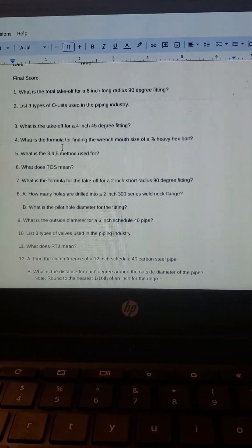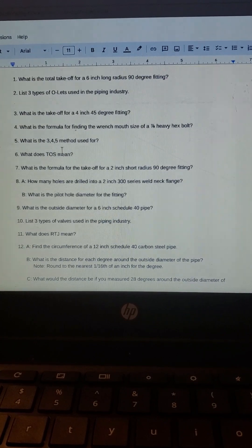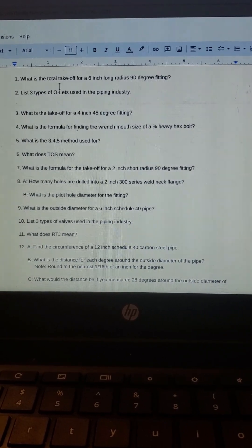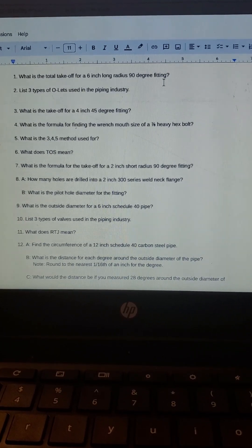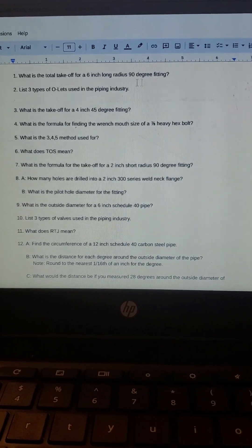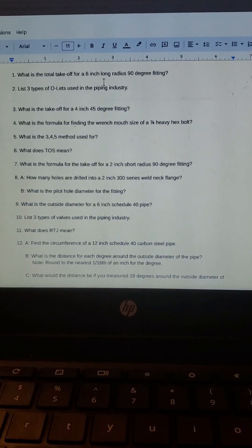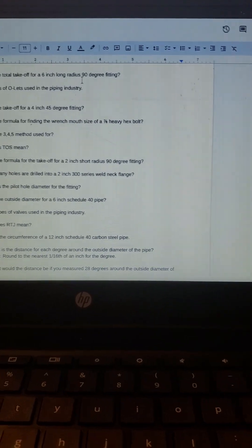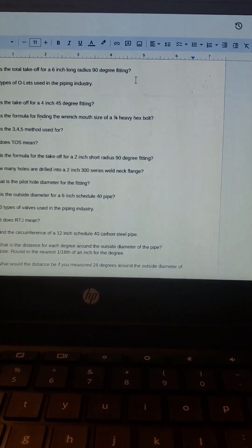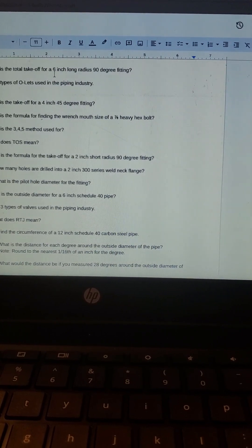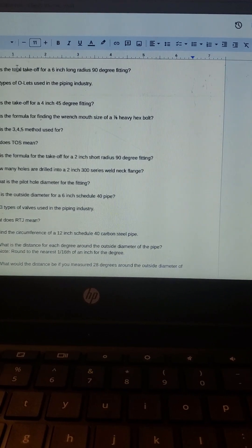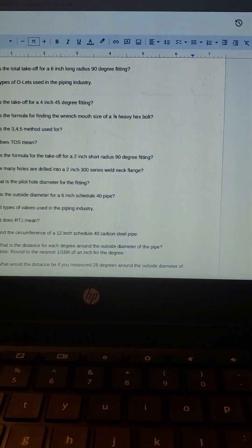These are pretty common. Let's see here, question number one: what is the total takeoff for a six inch long radius 90? So you got two types of elbows here, you got long radius and short radius. Industrial piping we use long radius a lot more often. So the long radius 90 is times 1.5, so if it's six inch pipe that would be nine inches, so it's a nine inch takeoff.